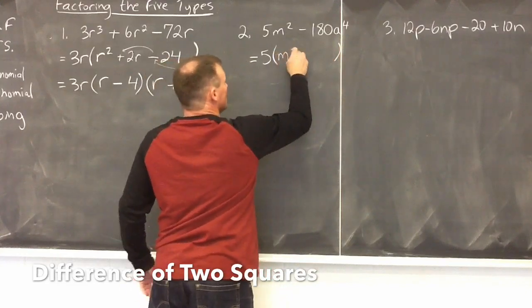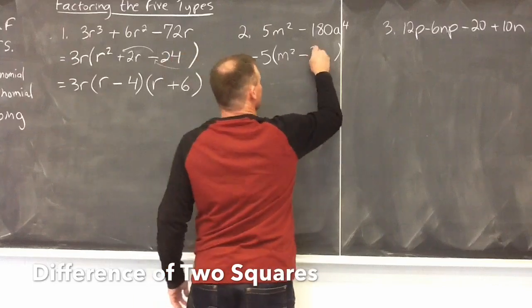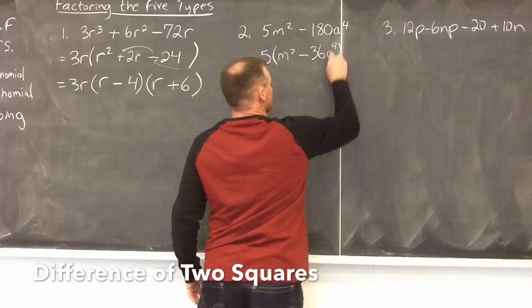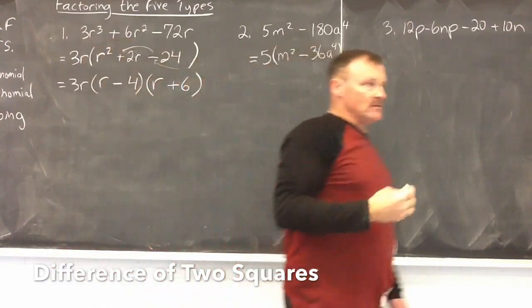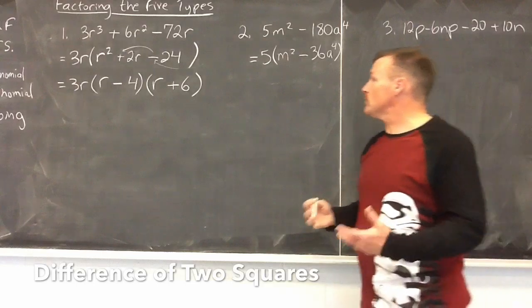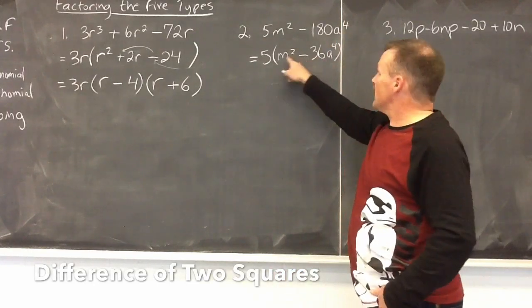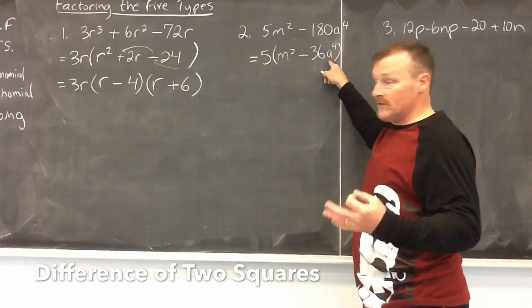You're going to be left with m squared minus 5 into 180 is 36, a to the 4. You don't change the variable parts at all. I have two terms, and so the question is, is this a difference of two squares? We have two terms, it's a difference. You can square root m to the 2, you can square root a to the 4. So it is a difference of two squares.